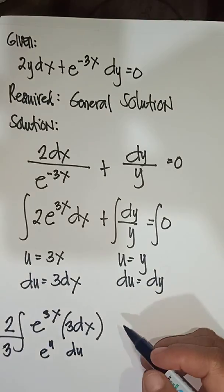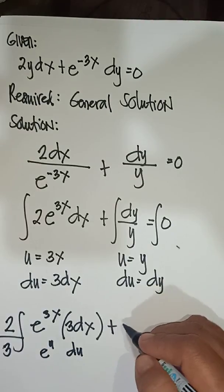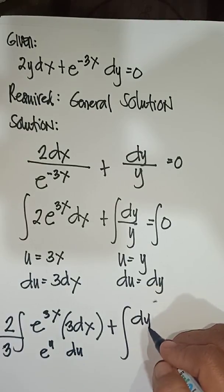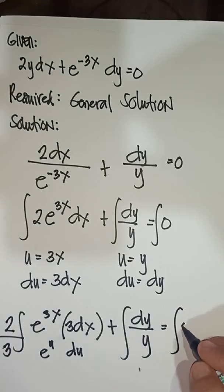Okay, then we will have plus dy over y equals 0.